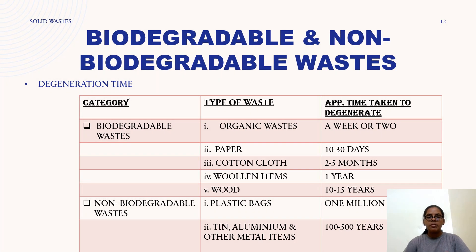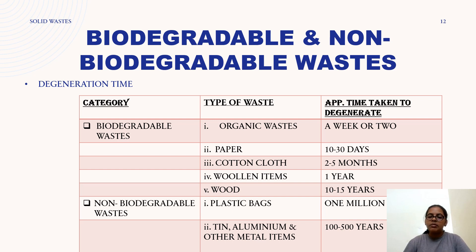Now let's look at this table which tells us about the degradation time of degradable and non-degradable waste. For example, in biodegradable waste: organic waste takes about 1 to 2 weeks to degenerate; paper takes about 10 to 30 days; cotton cloth takes about 2 to 5 months; a woolen item takes about 1 year; and wood takes about 10 to 15 years. For non-biodegradable waste, plastic bags take 1 million years to degenerate, and tin, aluminium, and other metal items take about 100 to 500 years.